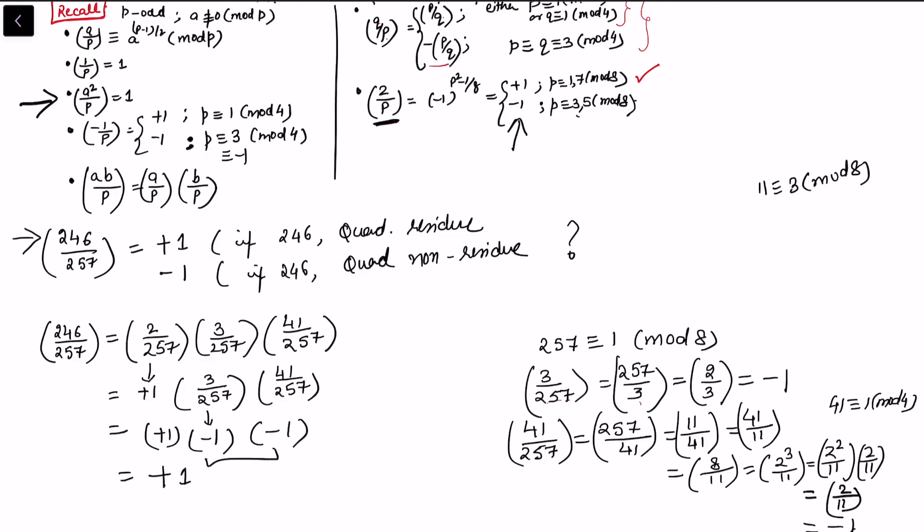So here we have -1. Now we got two negatives and we got +1, so the overall answer is +1. So x² ≡ 246 (mod 257) is solvable. We can simply say that 246 is a square mod 257, or we may say that this is a quadratic residue mod 257.